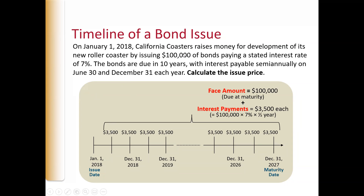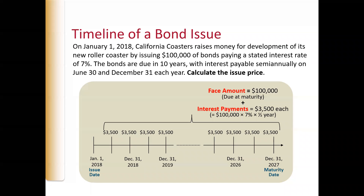For example, there's a $100,000 bond paying a stated interest rate of 7%. All that means is every six months they are going to pay $100,000 times 3.5%, because 7% is annually and 3.5% is every six months. So they pay $3,500 every six months. That's all the stated interest rate means.